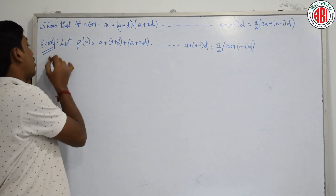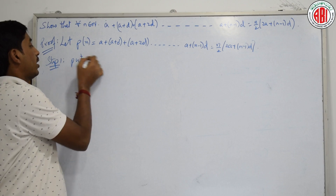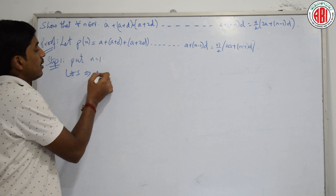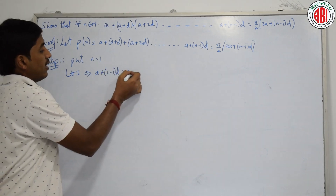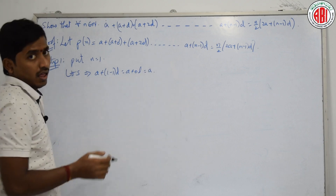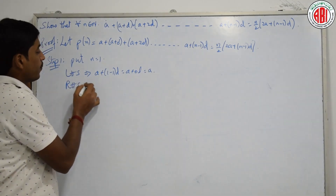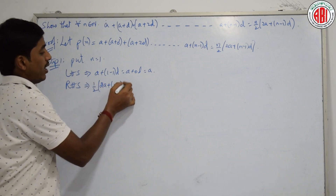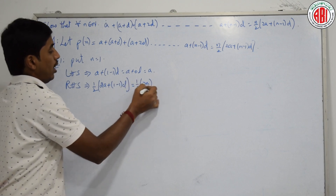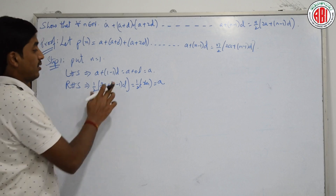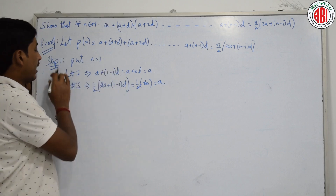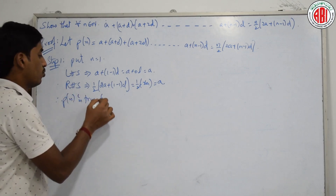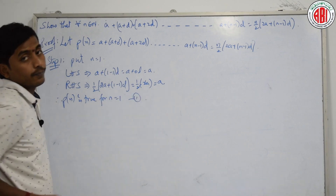Step 1: put n equal to 1. LHS is A + (1−1)·D = A + 0·D = A. RHS is 1/2 · (2A + (1−1)·D) = 1/2 · 2A = A, since the 0D term vanishes and the 2 cancels. LHS equals RHS. Therefore, P(n) is true for n equal to 1.